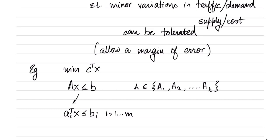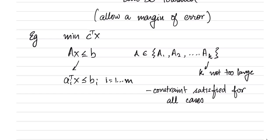What does it mean to solve this linear programming problem where A could be any of these matrices? Assume that k is a fixed number, not too large. We want to solve this such that the constraint should be satisfied for all cases. Another way to say this is that it should always be feasible - no matter what A I choose, the problem should be feasible.